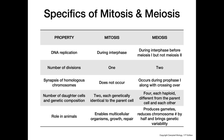Lastly, the role these two division processes play in animals: mitosis enables organisms to grow and to repair tissue and things of that nature, whereas the main purpose of meiosis is the production of gametes, and in that process we reduce our chromosome number by half and provide some genetic variability.